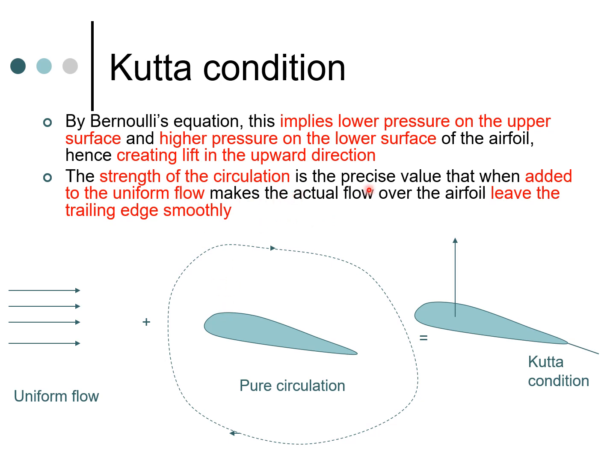So the strength of the circulation is the precise value which when we add it to uniform flow makes the actual flow on the airfoil leave the trailing edge smoothly. So this is how you calculate the circulation.